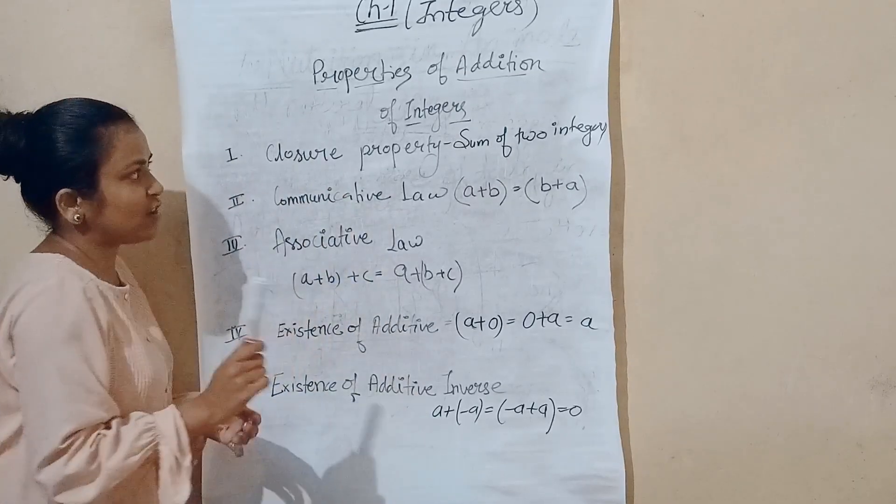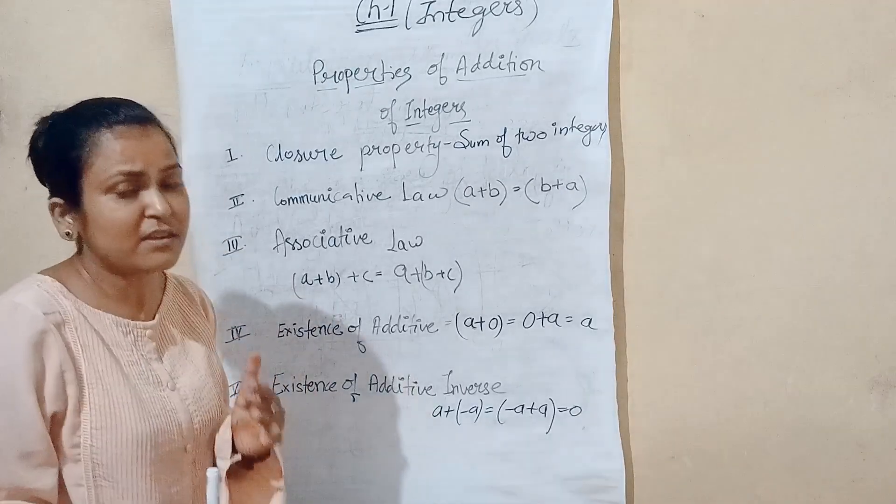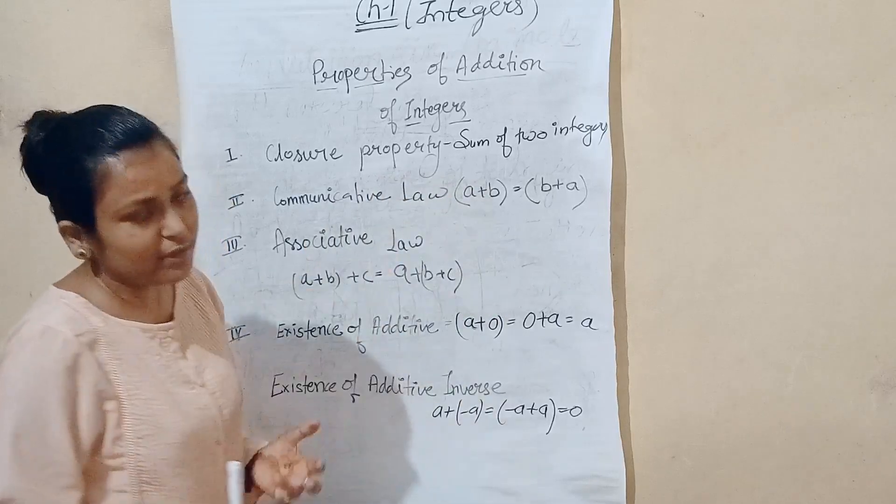Properties of addition of integers. In addition, there are properties that are different methods. They are laws. First, closure properties. We have two integers.